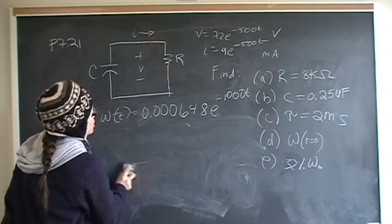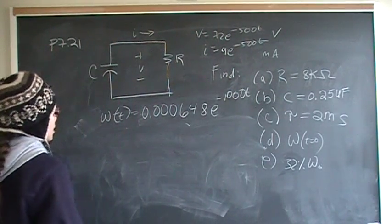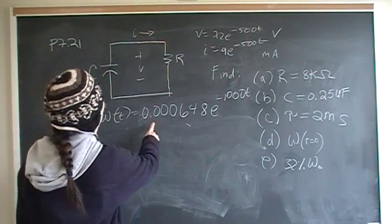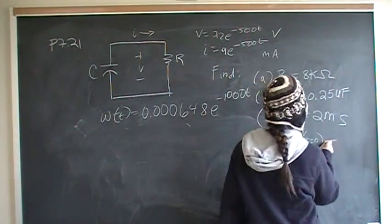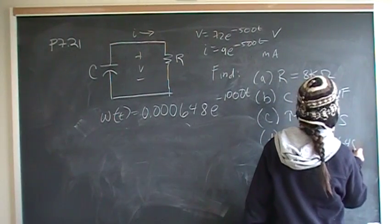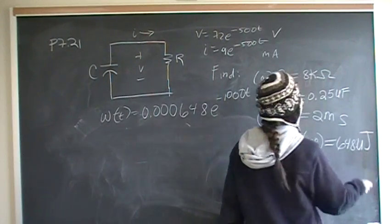So at time 0, e to the 1000t just becomes 1, and that gives me 648 microjoules. So energy at time 0 is 648 microjoules.